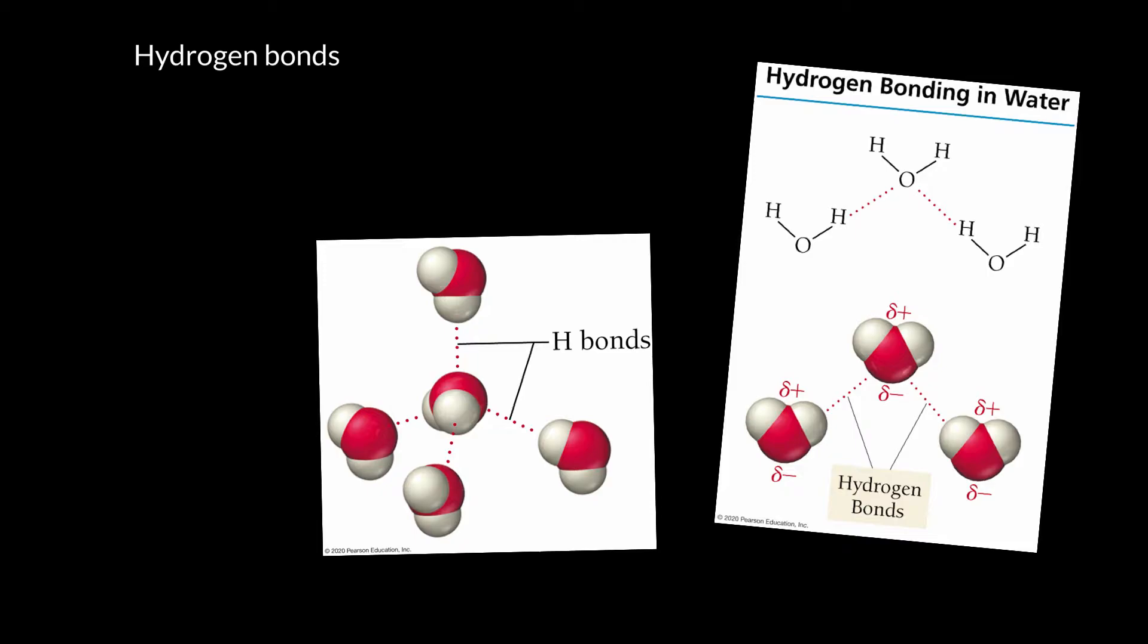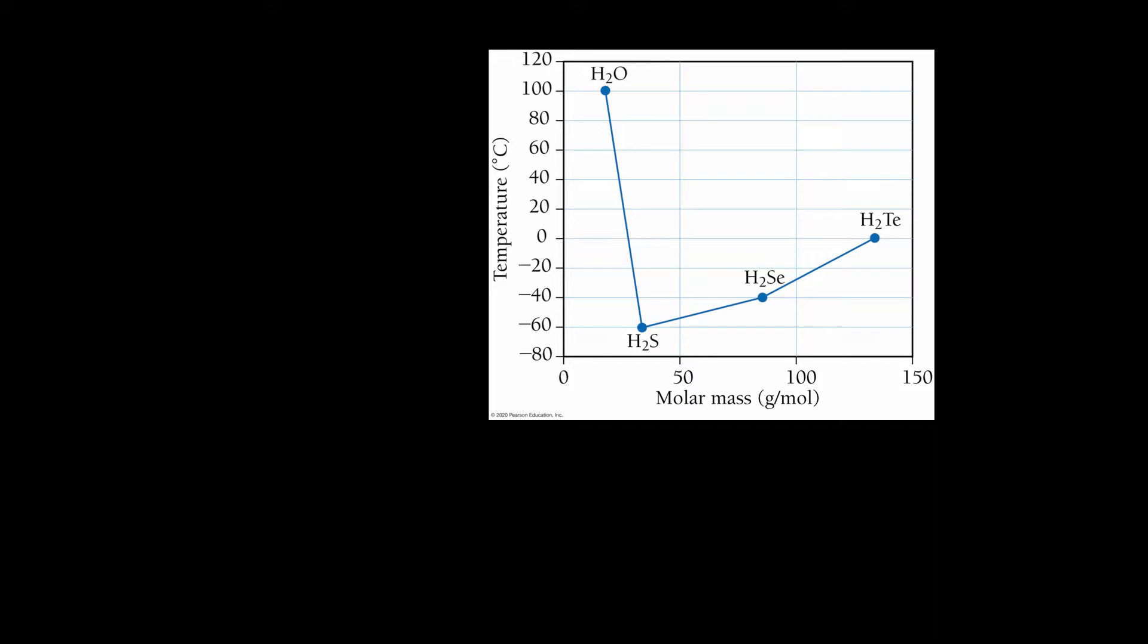Let me show you a graph over the next page, and we'll see why water is pretty darn weird. This is a graph of the boiling point temperature - sorry, I didn't write boiling point here - versus the molar mass. And what is this really trying to show?